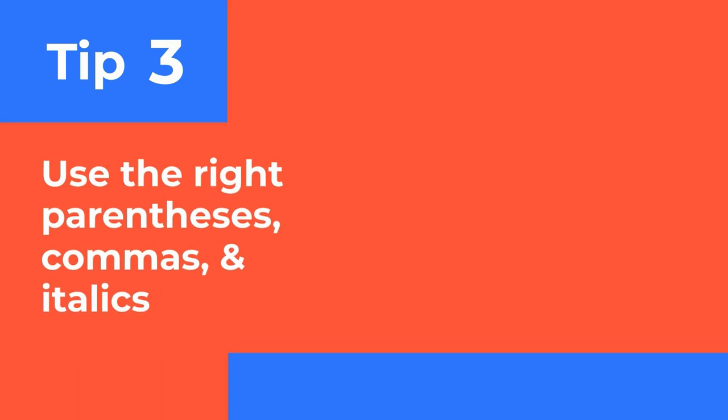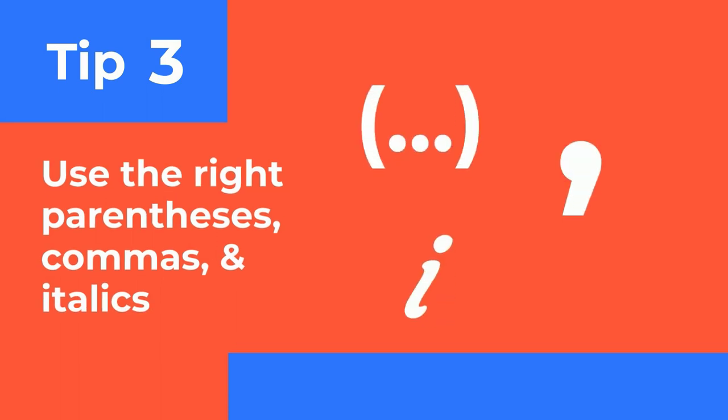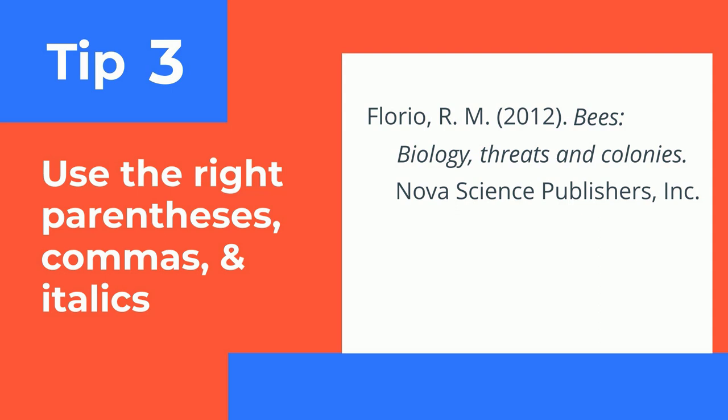Tip 3 – Use the right parentheses, commas, and italics. Here's an example of a citation for a journal article. See all the parentheses, commas, and italics? Those need to be in the right place, and it changes depending on what you're citing. So think back to Tip 1 – Use an APA guide.